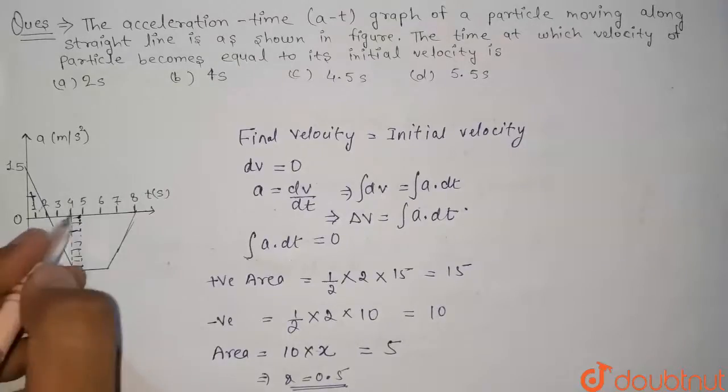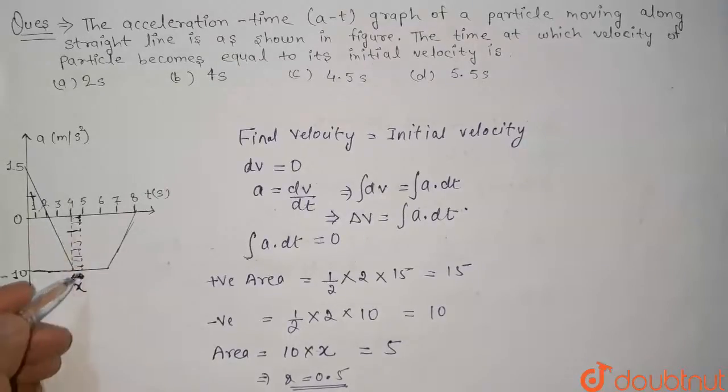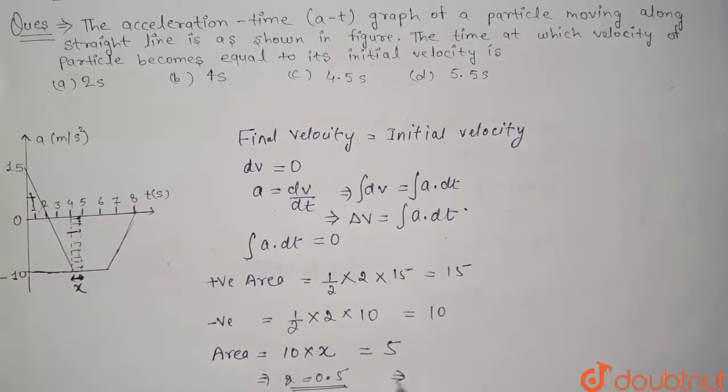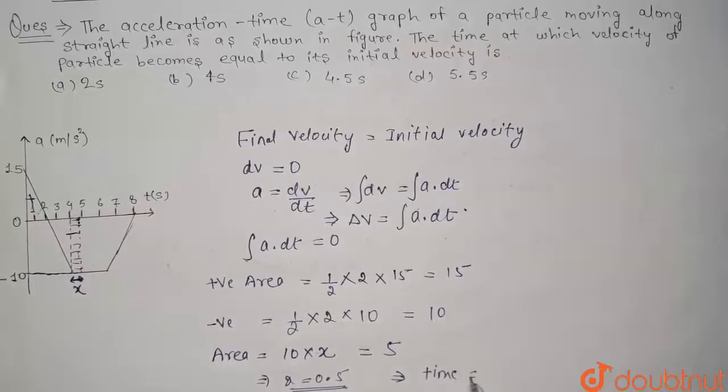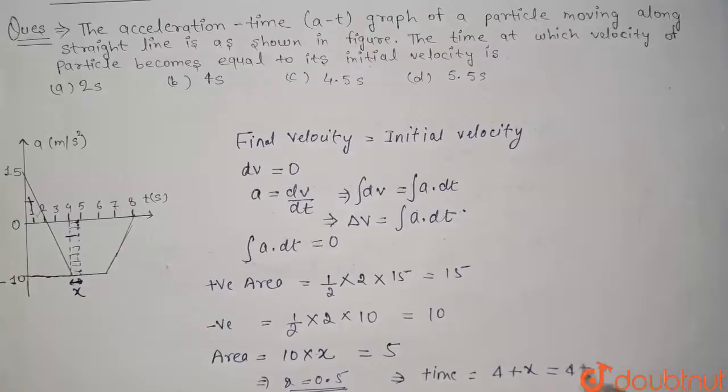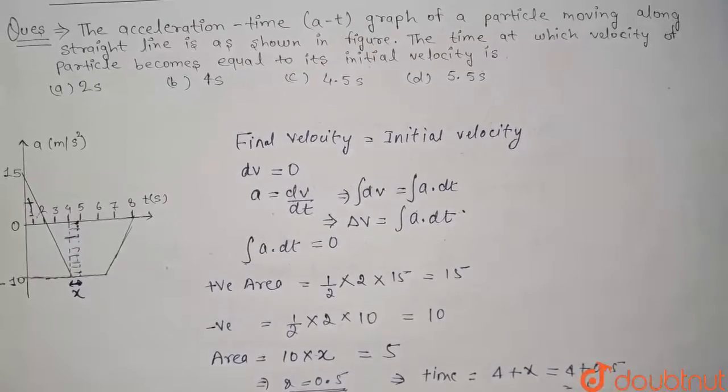So if x is 0.5 and this is 4, so 0.5 right side of 4 will be equal to, so time will be equal to 4 plus x, that is 4 plus 0.5, that is 4.5 second.